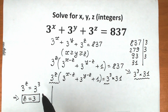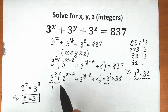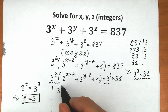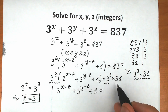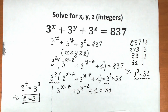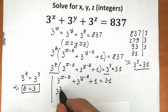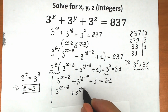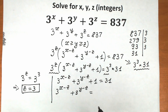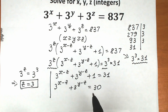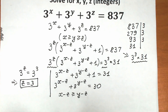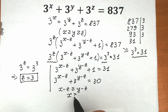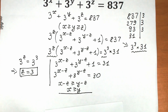We cancel 3 to the power z in our heads, but we still have the expression inside parentheses. So we have 3 to the power x minus z plus 3 to the power y minus z plus 1 equal to 31 minus 1, which is 30. We can also see that x minus z is greater or equal than y minus z, confirming that x is greater or equal than y — an inequality we really need right now.